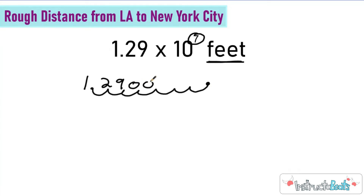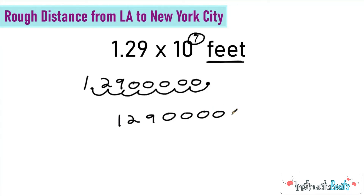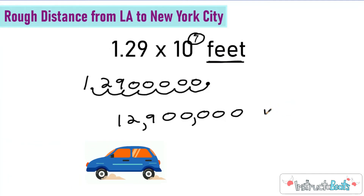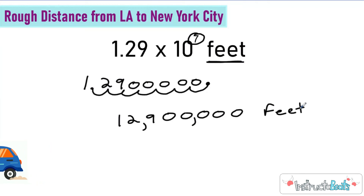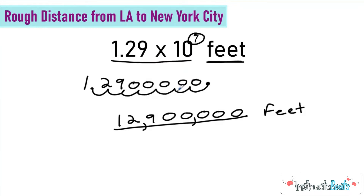I put zeros in all the place values I need to fill in and rewrite it: 1, 2, 9, and five zeros, which makes this 12,900,000. So the rough distance from Los Angeles to New York City is 12,900,000 feet — the same value shown in scientific notation, just written in standard form. The shortcut: look at the exponent and move that decimal place. The long way: 10 to the seventh power, when you multiply seven copies of 10 together, is really 10 million.